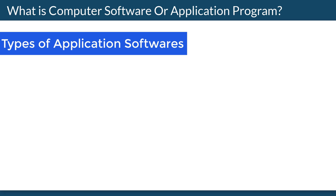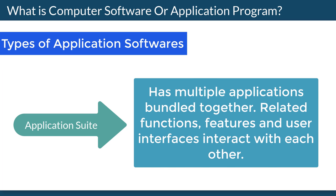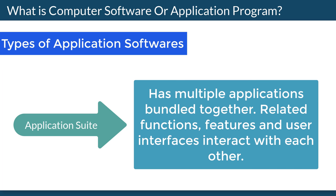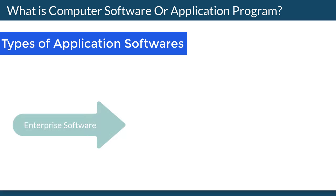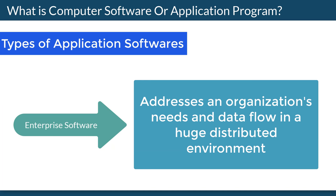Let's look into the types of application software. Application Suite has multiple applications bundled together; related functions, features, and user interfaces interact with each other. Enterprise Software addresses an organization's needs and data flow in a huge distributed environment.